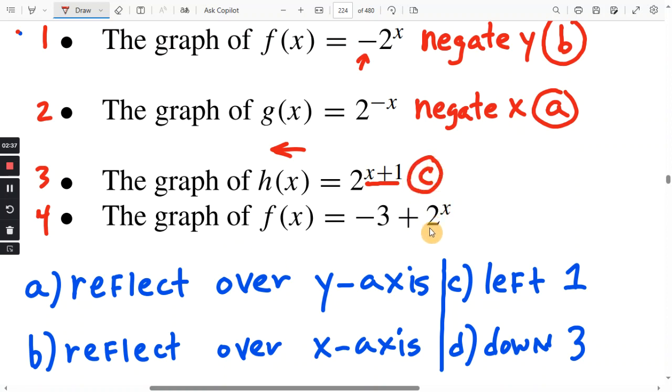And finally, 2 to the x, and then we do minus three on the 2 to the x. That makes it go three units down. So that is answer d.